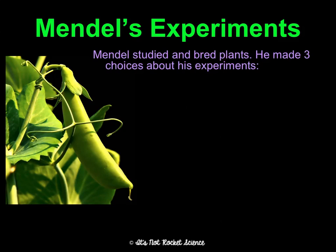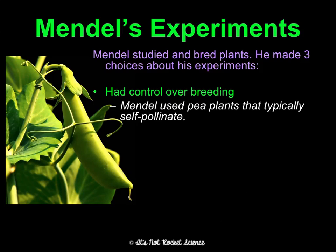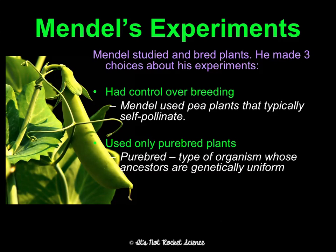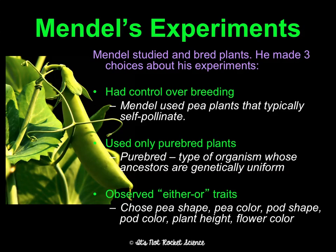He studied and bred pea plants, and three things were true about his experiments. First, he was able to control the breeding — he used plants that self-pollinate so that he could make sure there wasn't any non-random mating going on. Two, he used only purebred plants, meaning plants whose ancestors are genetically uniform, so when he used a purple plant, it was completely purple and every organism it had come from had been purple as well. And then he also only looked at either-or traits — traits where there were only two options, such as round versus wrinkled peas, or tall versus dwarf, or purple flowers versus white flowers. Most human traits are more complex than that, but there are some in humans that are either-or traits.